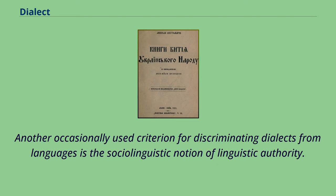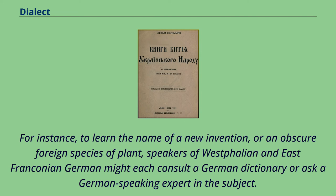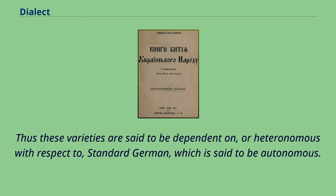Another occasionally used criterion for discriminating dialects from languages is the sociolinguistic notion of linguistic authority. According to this definition, two varieties are considered dialects of the same language if they would defer to the same authority regarding questions about their language. For instance, speakers of Westphalian and East Franconian German might each consult a German dictionary or ask a German-speaking expert, making these varieties heteronymous with respect to standard German, which is said to be autonomous.